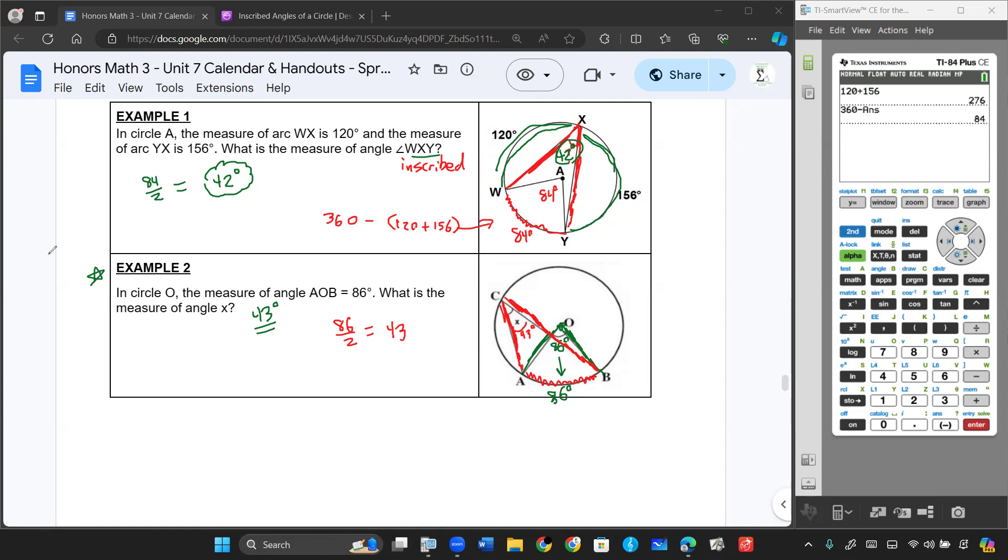And it doesn't matter where I draw that. I can draw that 43 degrees anywhere as long as it has the same endpoints of those chords that touch A and B as the other ones do. So these are all going to be 43, no matter how I draw. All right, thanks for watching. The next video will cover different special angles in circles.